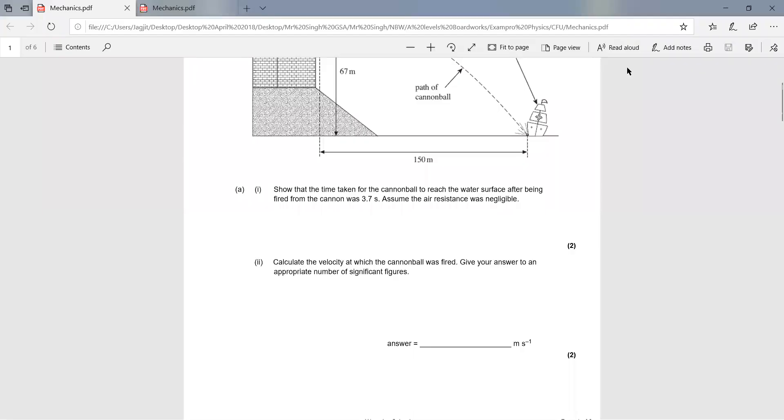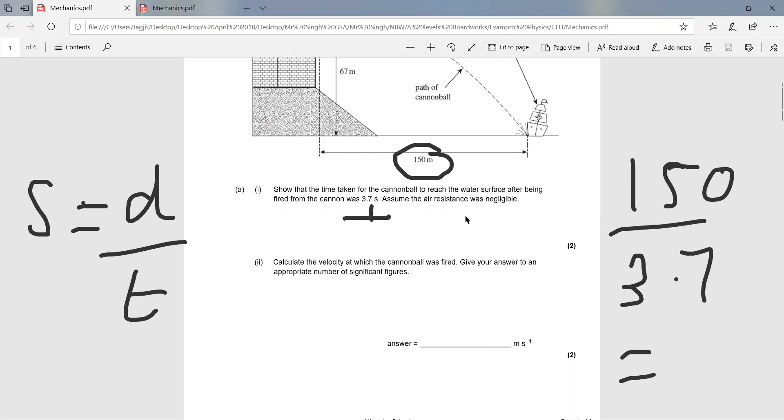In the second question, it's asking us to find the horizontal velocity. There's only one equation that suits this: horizontal velocity equals distance over time. We've already got the distance, 150 meters, and the time from the previous question. Simply divide 150 by 3.7 seconds to get the answer of 41 meters per second.